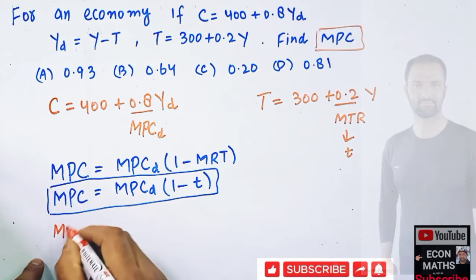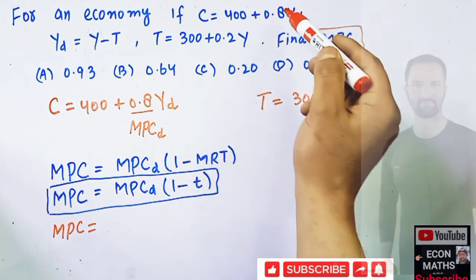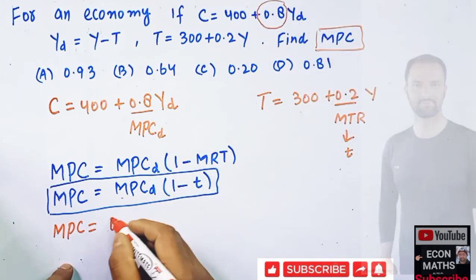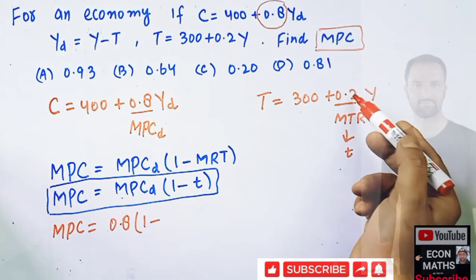That means our MPC is equal to what is our MPC of disposable income, that is given by this. So MPCd is 0.8.